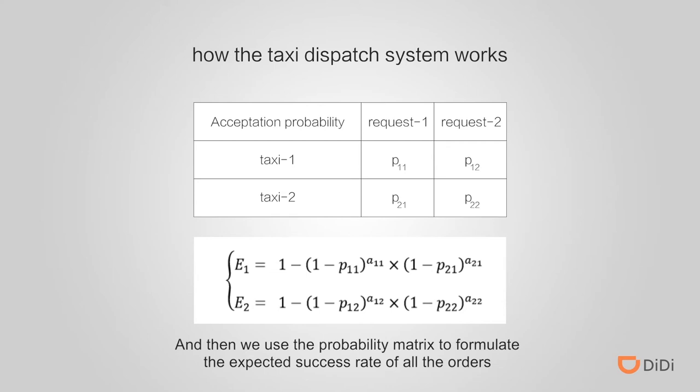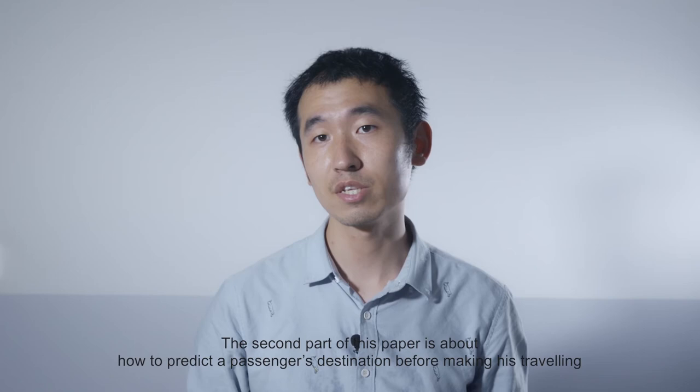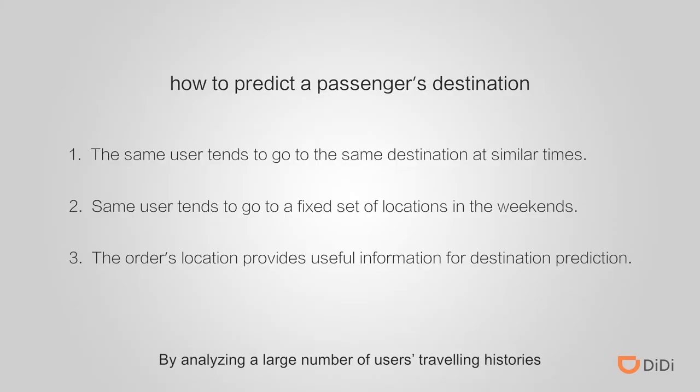By solving this model, we obtain the best dispatch result. The second part of this paper is about how to predict a passenger's destination before making his trip.